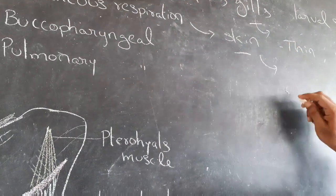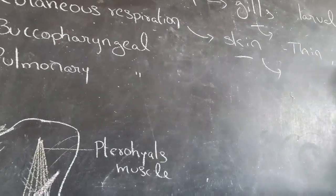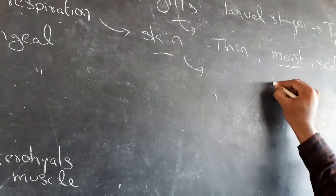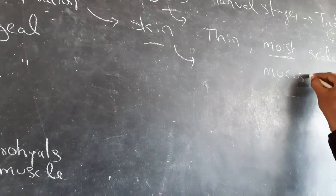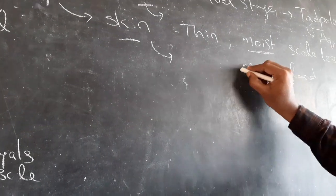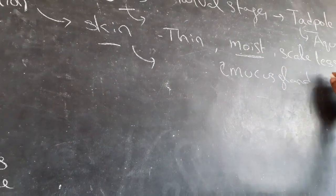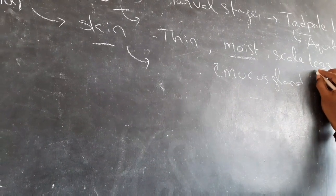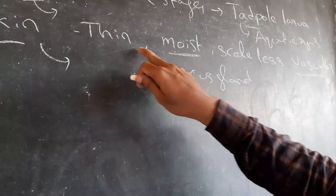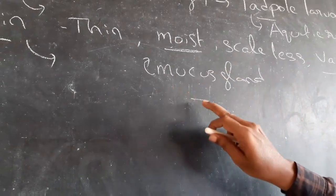Skin is permeable to gases. The skin is kept moist by mucus glands present on the skin, which release mucus. Scaleless skin allows the gases through. These conditions — moist skin, scaleless skin, and highly vascular nature — are required for the exchange of gases through the skin.